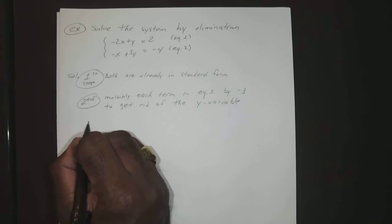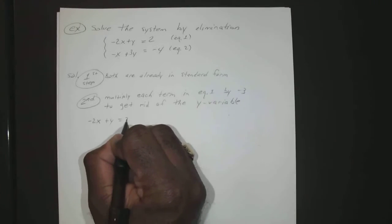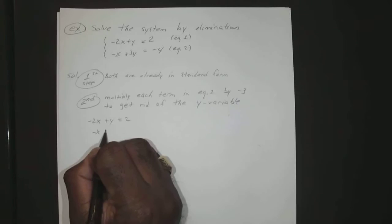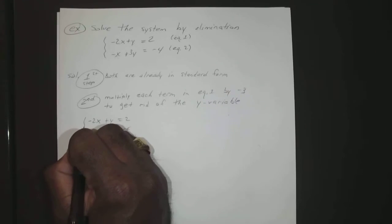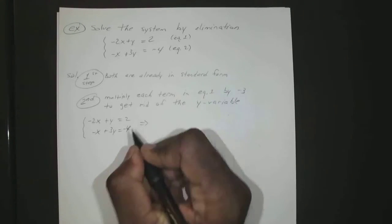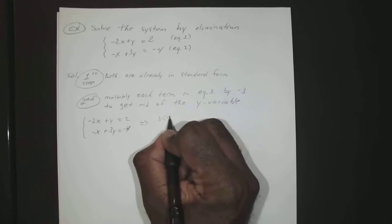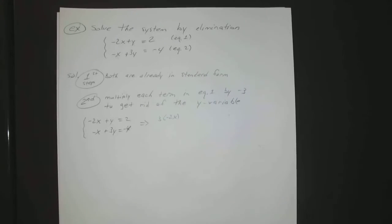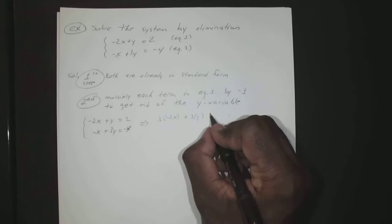Okay, so that means you have -2x + y = 2 and -x + 3y = -4. We're going to make that 3 times -2x plus 3 times y.